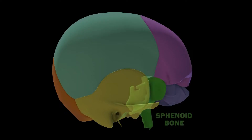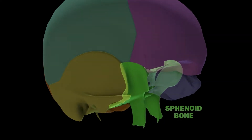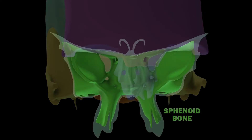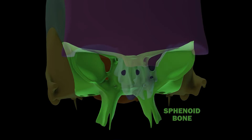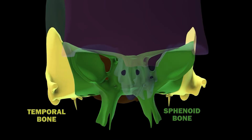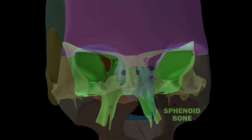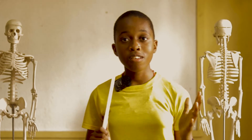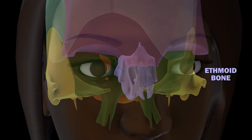Then we also have the sphenoid bone. The sphenoid bone is the most complex bone in the human body, very complex due to its shape, which is why we can also refer to it as the wasp bone. The ethmoid bone forms the roof of the nose, making up most part of the cranium. Most of these bones are located in pairs.